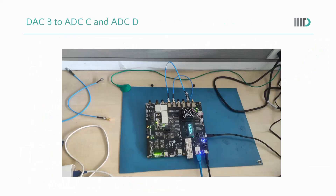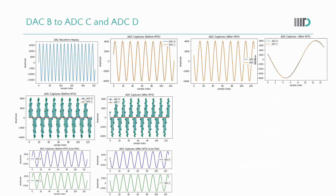In this configuration, we connect DAC-B to ADC-C and ADC-D using a splitter. ADC-C and ADC-D are on the same tile, and we are using only one DAC — DAC-B. As you can see in the plot, before MTS the plots are already aligned, and after MTS the plots remain aligned. This is because the ADCs are on the same tile and only one DAC is used, so MTS is not required and the before and after plots are the same and aligned.